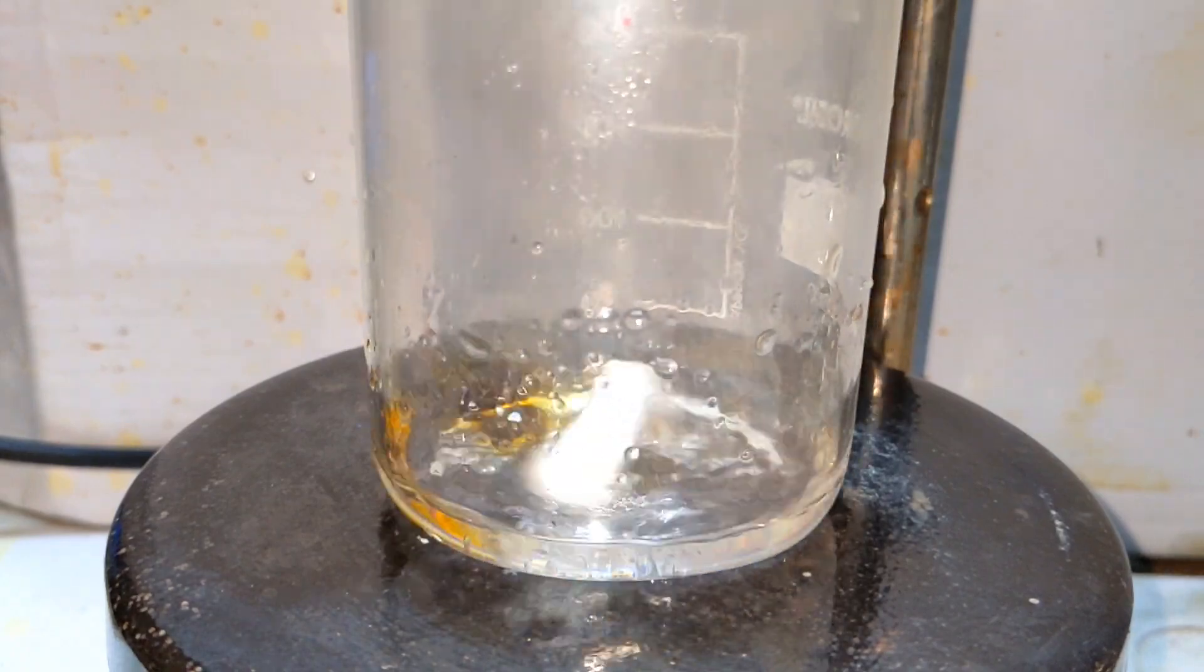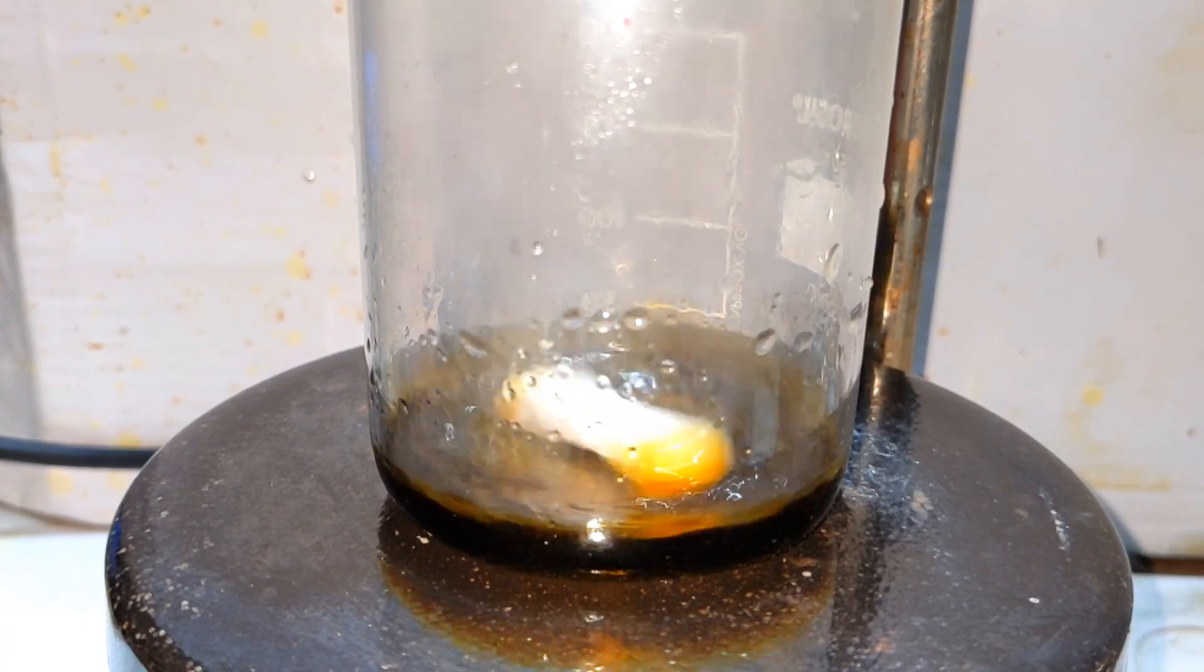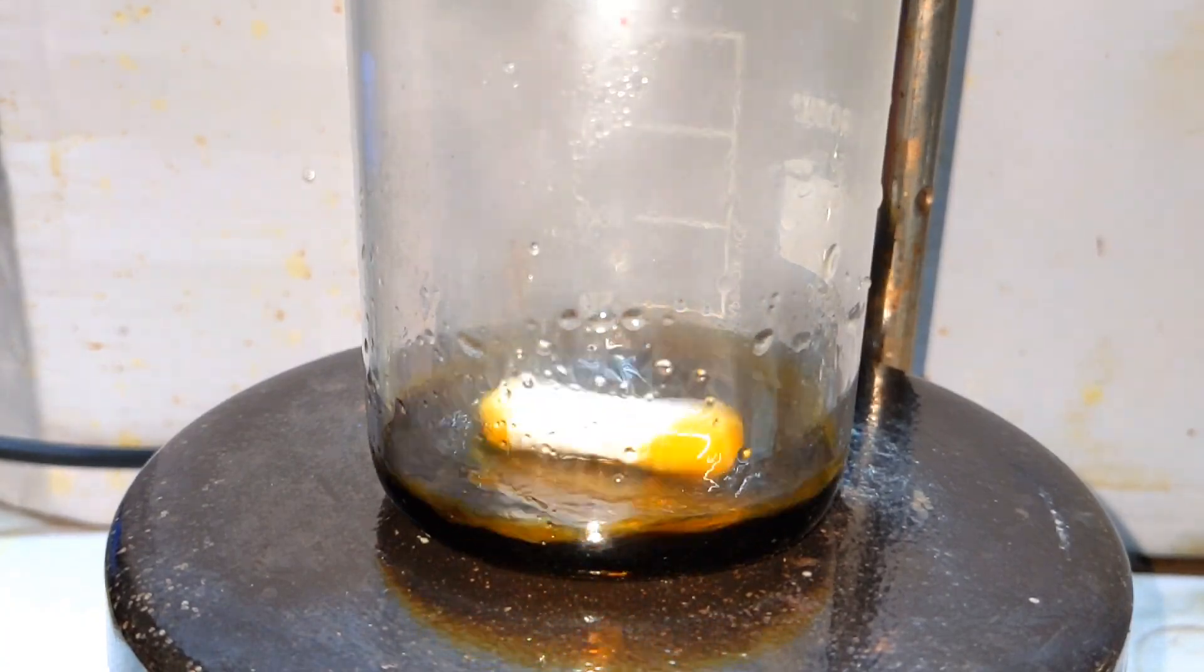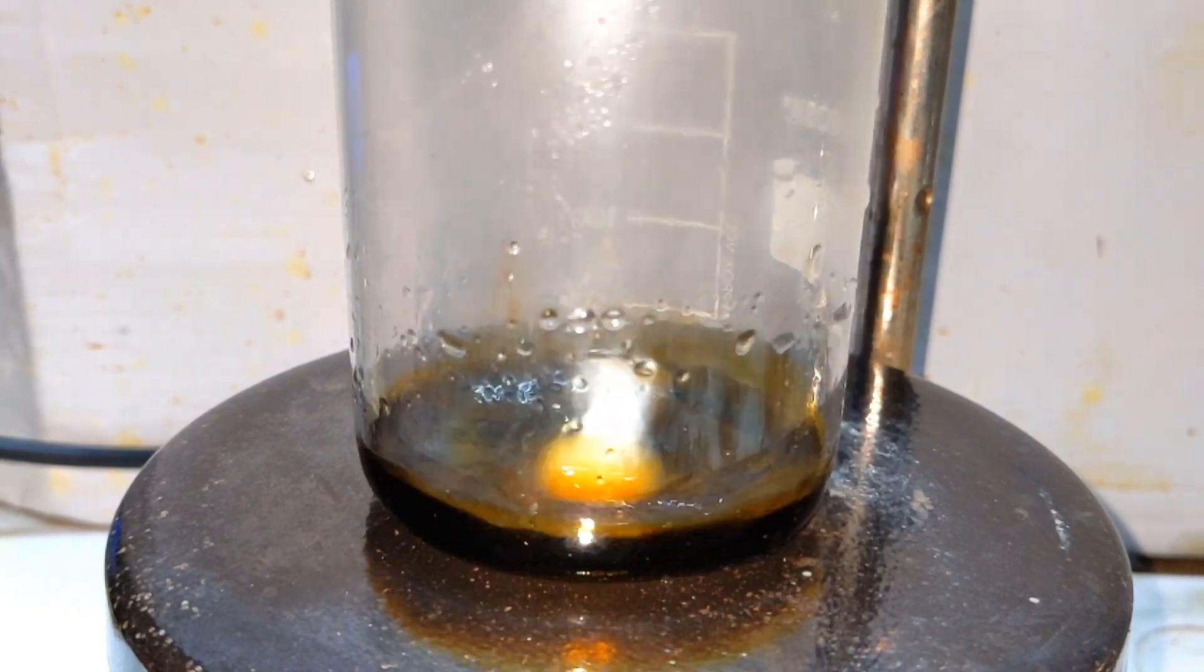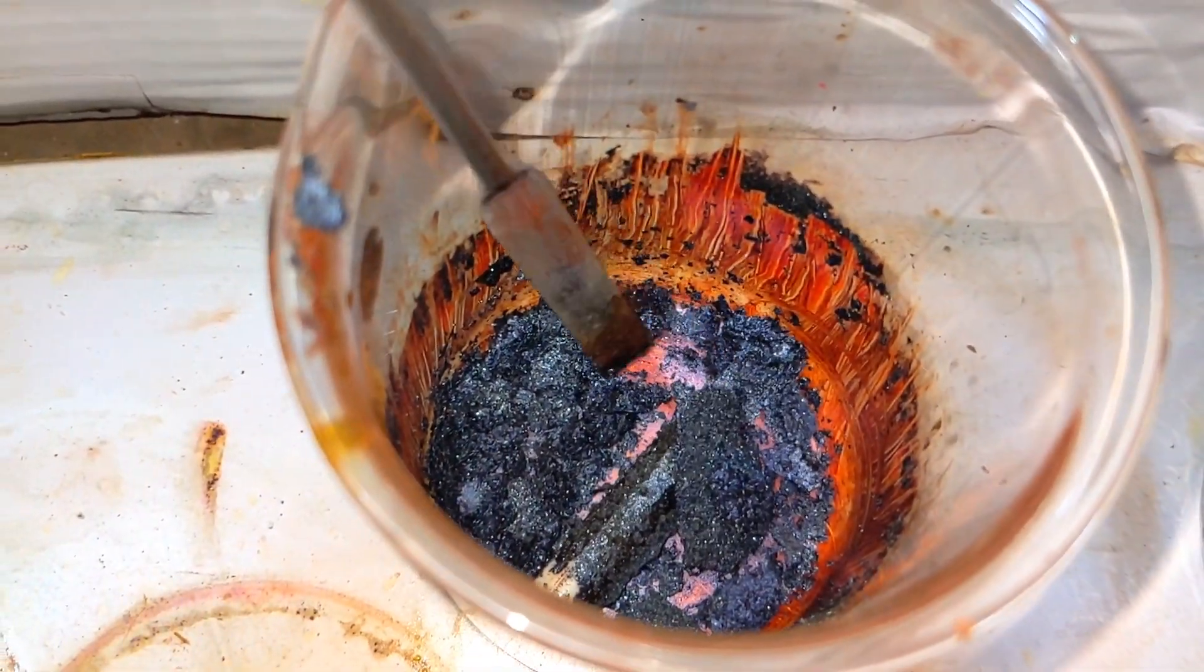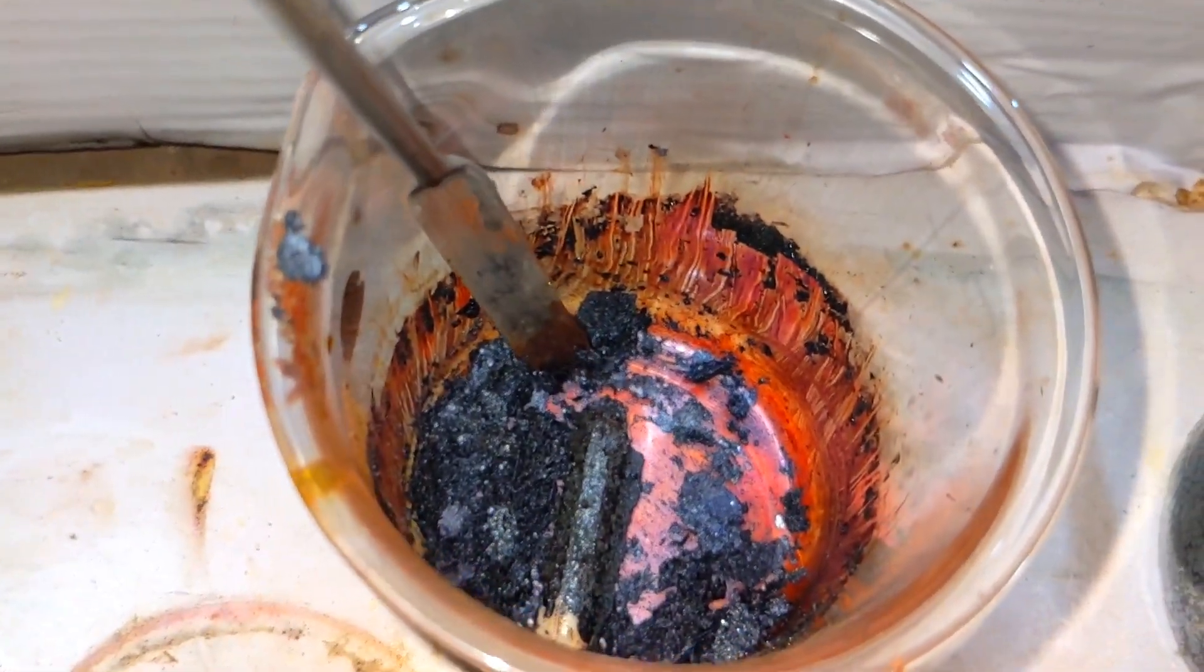The crystals were then recrystallized by using toluene. After recrystallization I was left with this dark almost black colored solid, and this is the methyl red.